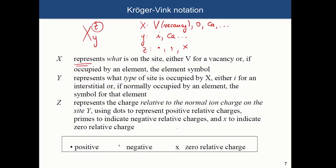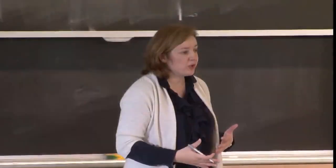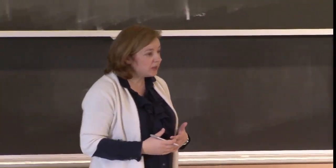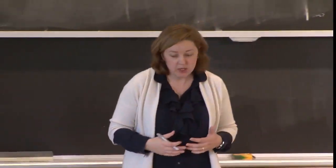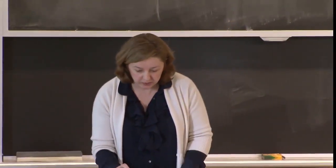To summarize: dot, comma, and cross correspond to positive, negative, and zero charge respectively. We will go through several examples to see how we label vacancies, interstitials, and other defects using Kroger-Vink notation.